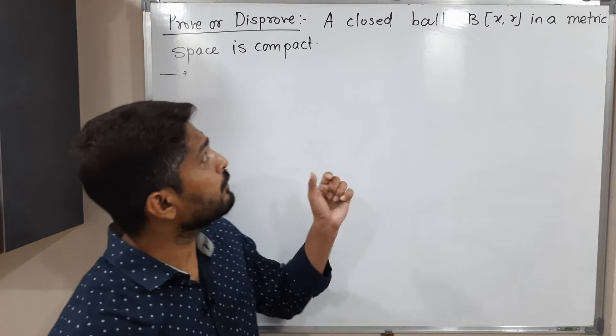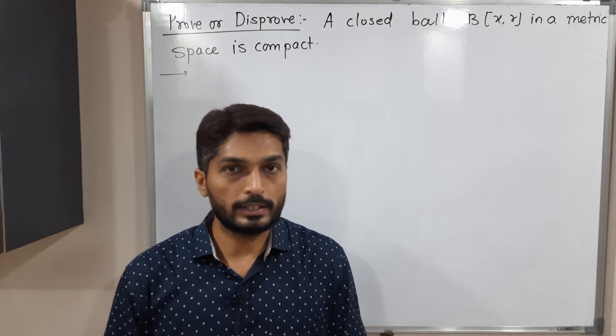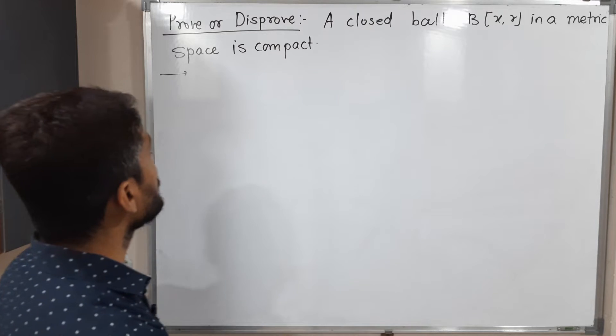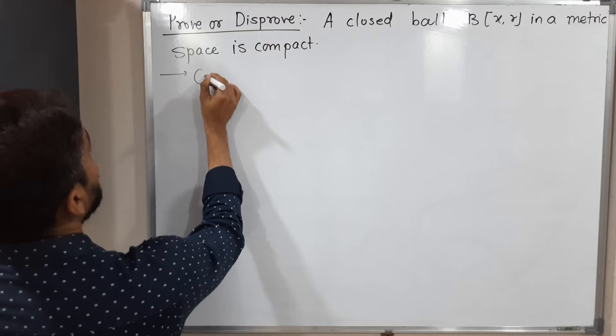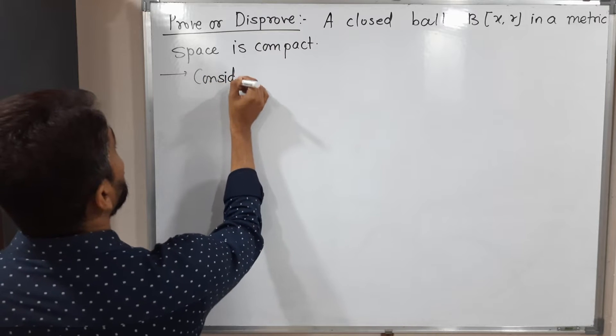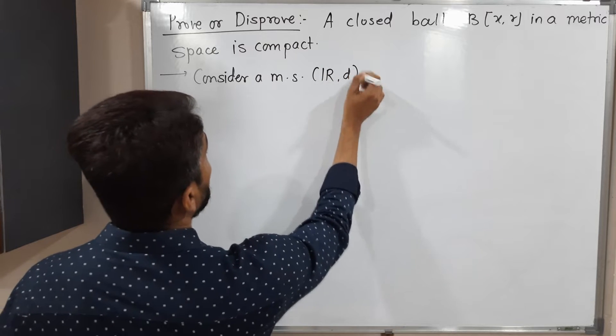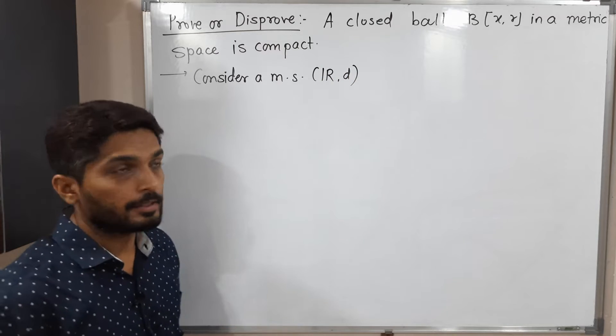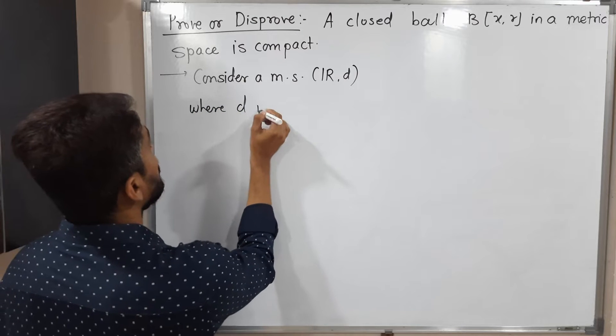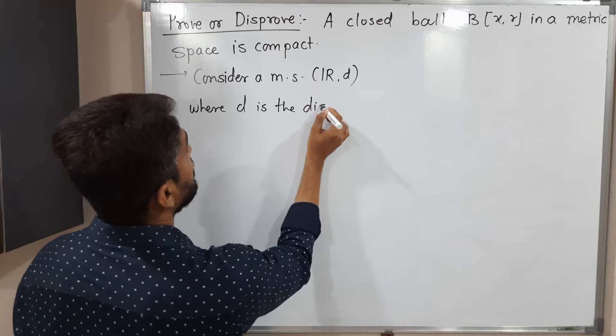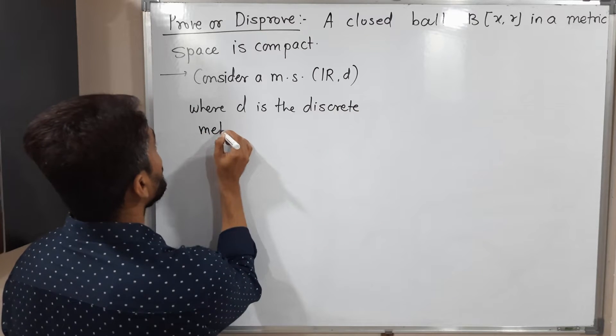We have to find a closed ball which is not compact. Let us write. I'm going to consider a metric space (R,d), where d is the discrete metric. I hope all of you are familiar with a discrete metric.